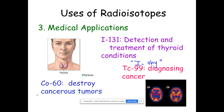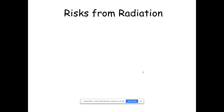Here are some mnemonics to remember these. For cobalt-60: 'I'm sickly — go destroy those tumors.' For technetium-99: 'diagnesium' — it sounds ridiculous, but that's how to remember detect/diagnose. And for iodine-131: 'I-thigh' — iodine, thyroid. So: iodine-131 → thyroid; cobalt-60 → destroying cancerous tumors; technetium-99 → diagnosing cancer. If these don't click, find your own way to remember them.